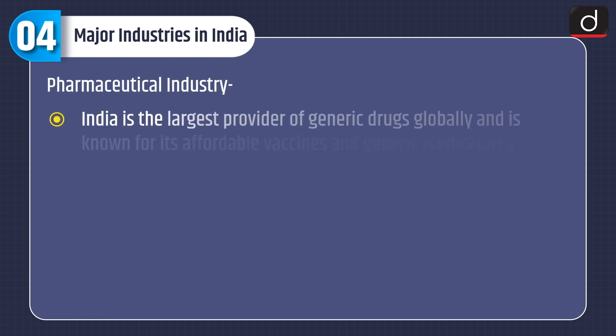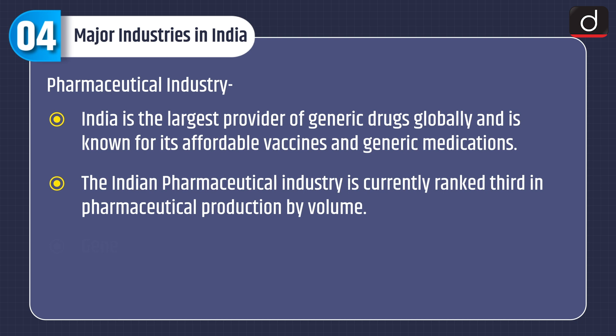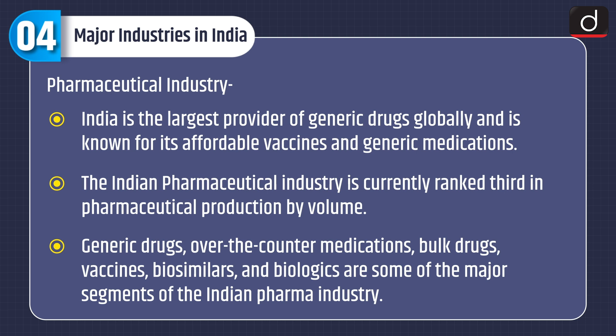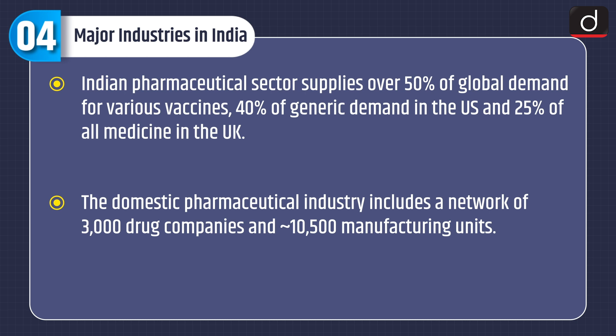Pharmaceutical industry: India is the largest provider of generic drugs globally and is known for its affordable vaccines and generic medications. The Indian pharmaceutical industry is currently ranked third in pharmaceutical production by volume. Generic drugs, over-the-counter medications, bulk drugs, vaccines, biosimilars, and biologics are some of the major segments. The Indian pharmaceutical sector supplies over 50% of global demand for various vaccines, 40% of generic demand in the US, and 25% of all medicine in the UK. The domestic industry includes a network of 3,000 drug companies and 10,500 manufacturing units.